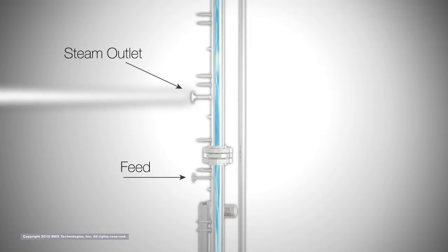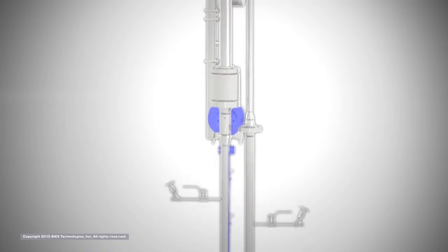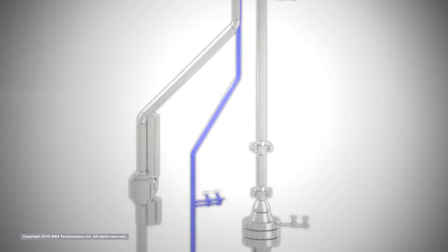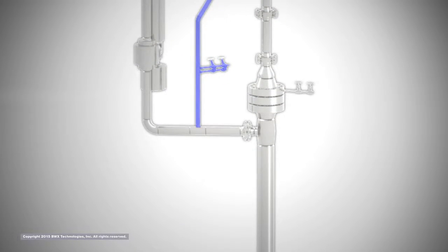Primary coolant flow is on the inside of the tubes and the secondary flow is on the outside of the tubes. A reactor coolant pump takes suction on the outlet of the steam generator and delivers flow to the inlet of the reactor vessel.